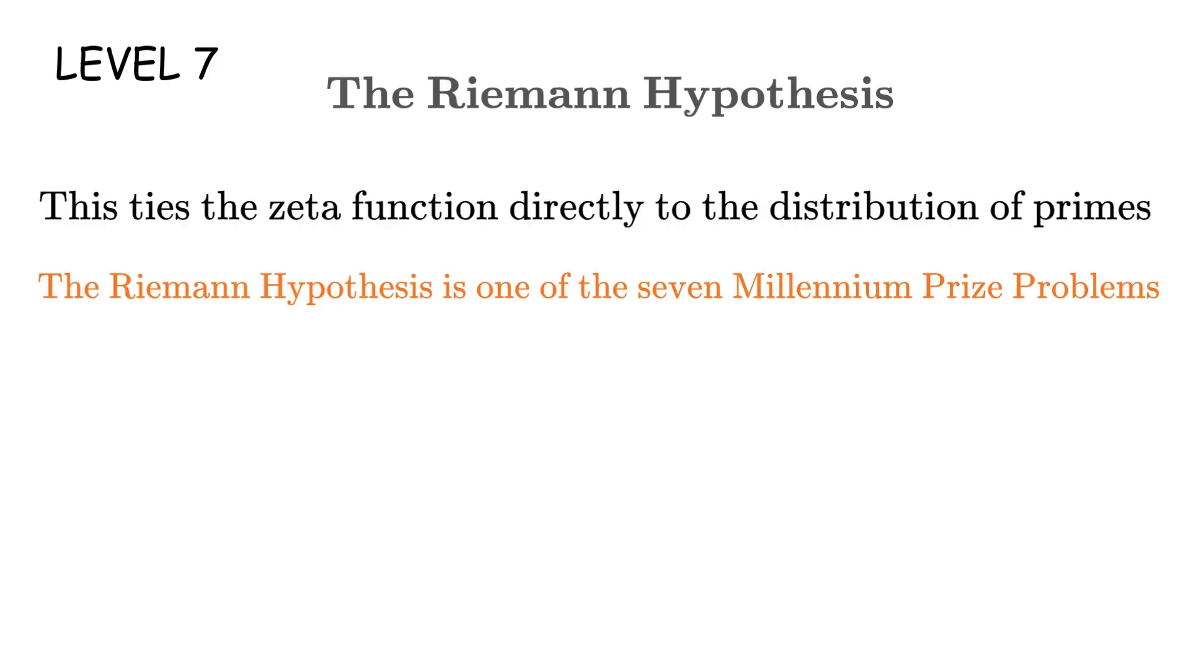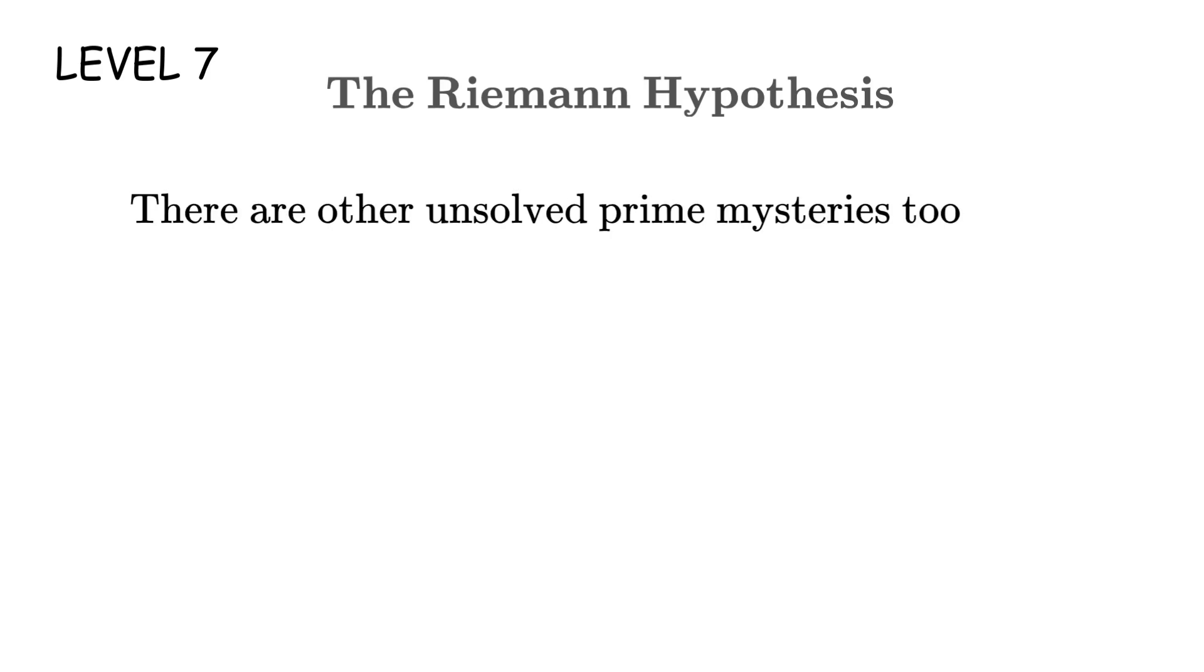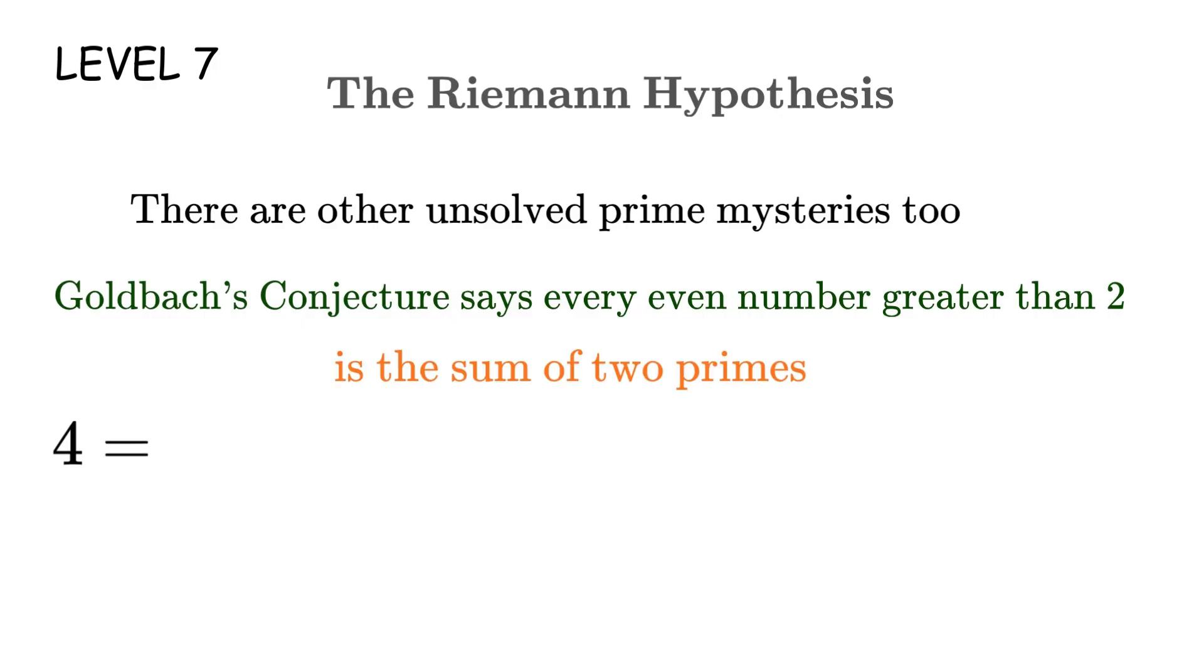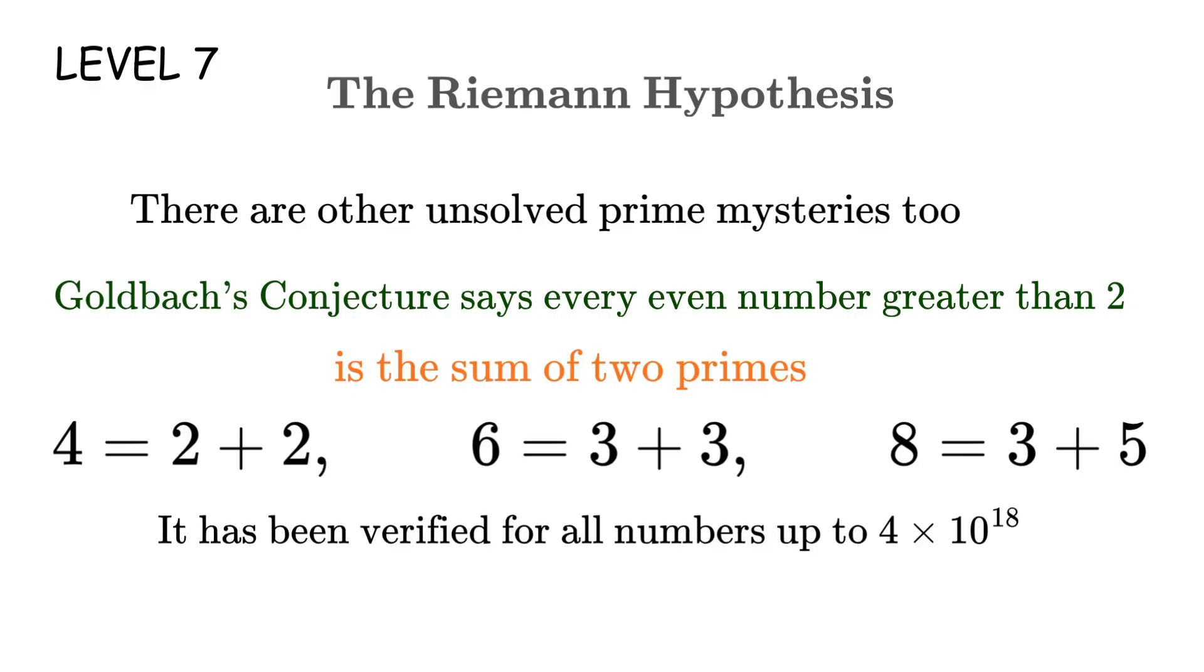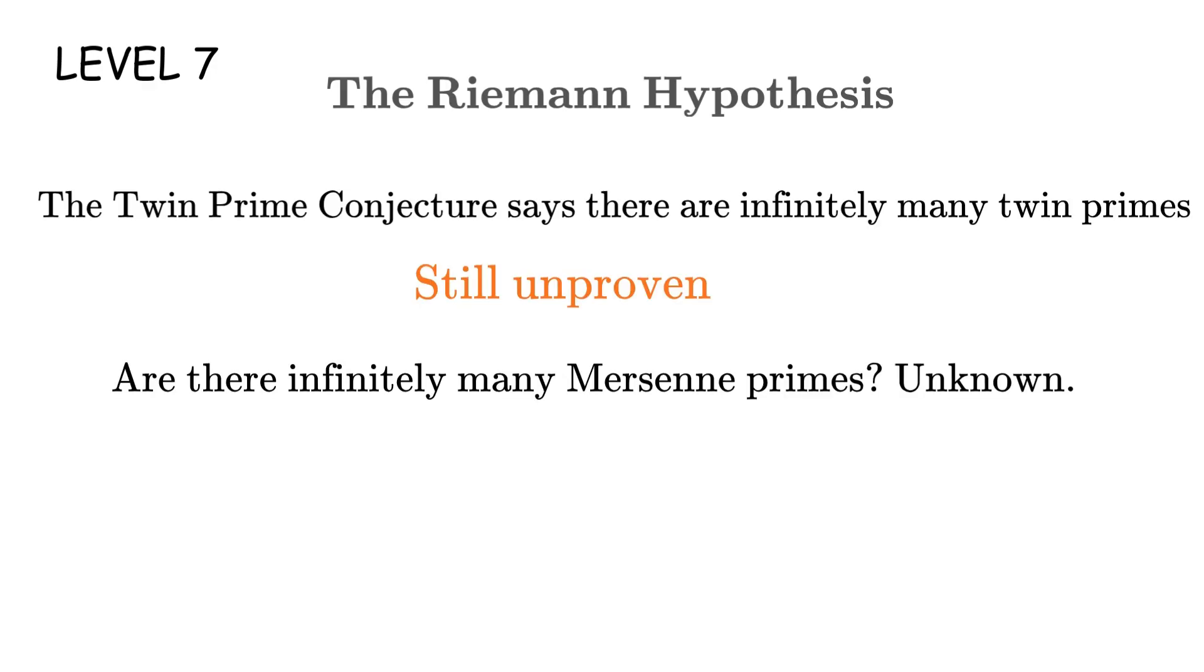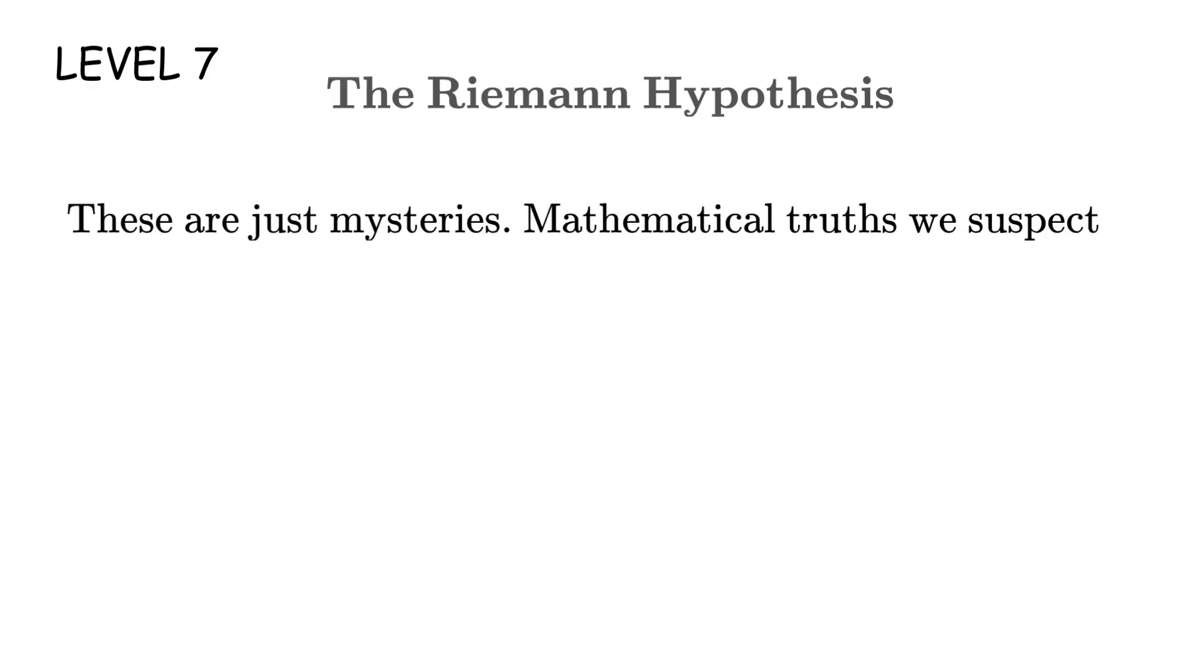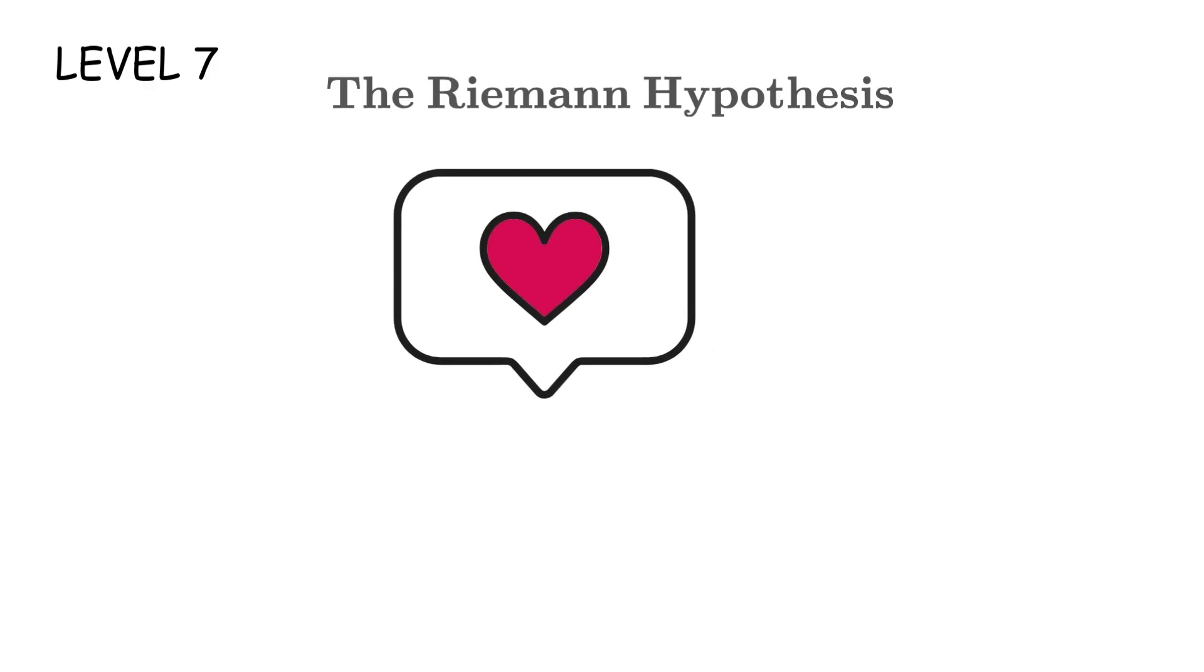The Riemann hypothesis is one of the seven Millennium Prize problems, with a $1,000,000 reward for anyone who can prove or disprove it. And if proven, it would predict prime distribution with stunning accuracy. There are other unsolved prime mysteries, too. Goldbach's conjecture says every even number greater than 2 is the sum of two primes. 4 equals 2 plus 2. 6 equals 3 plus 3. 8 equals 3 plus 5. Verified for numbers up to 4 times 10 raised to the power of 18. But no proof exists. The twin prime conjecture says there are infinitely many twin primes. Still unproven. Are there infinitely many Mersenne primes? Unknown. Are there infinitely many Fibonacci primes? Unknown. No proof exists, despite centuries of trying. These are just mysteries. Mathematical truths we suspect, but cannot confirm. And like, comment, subscribe.